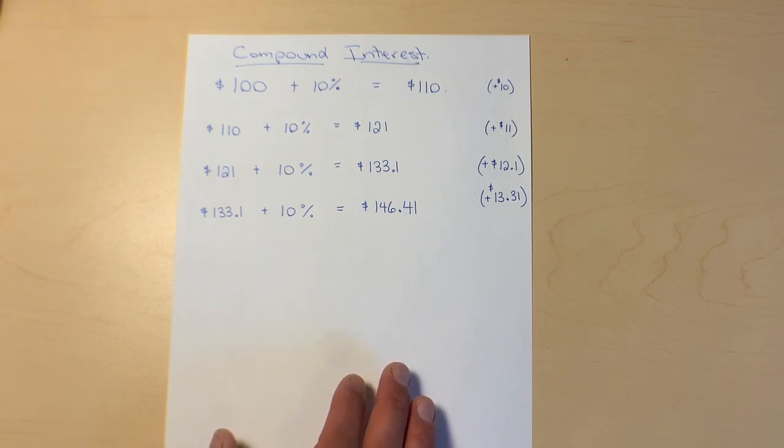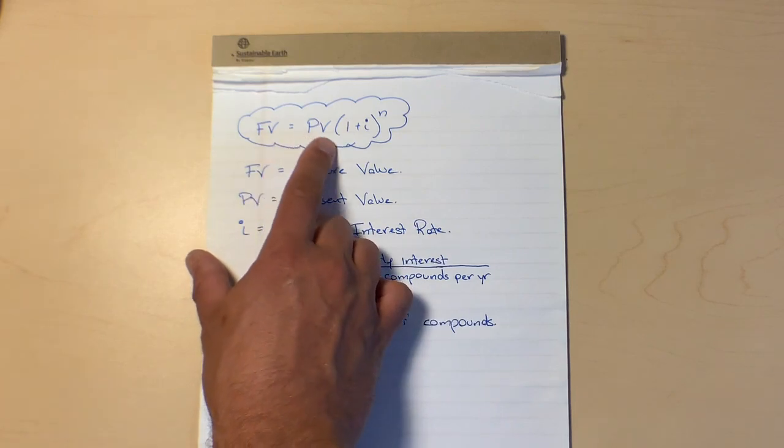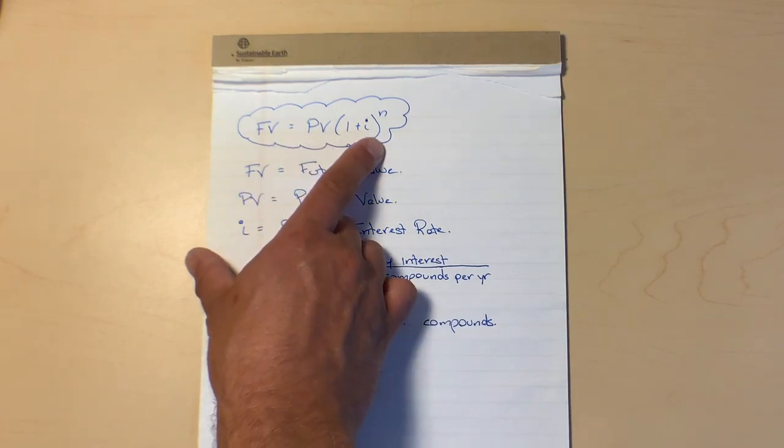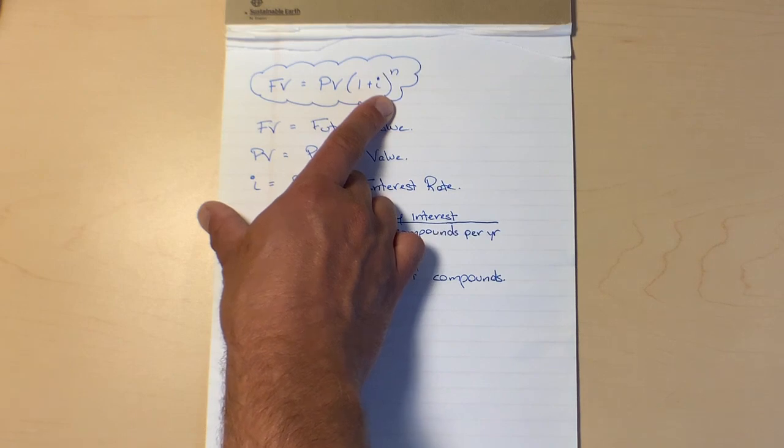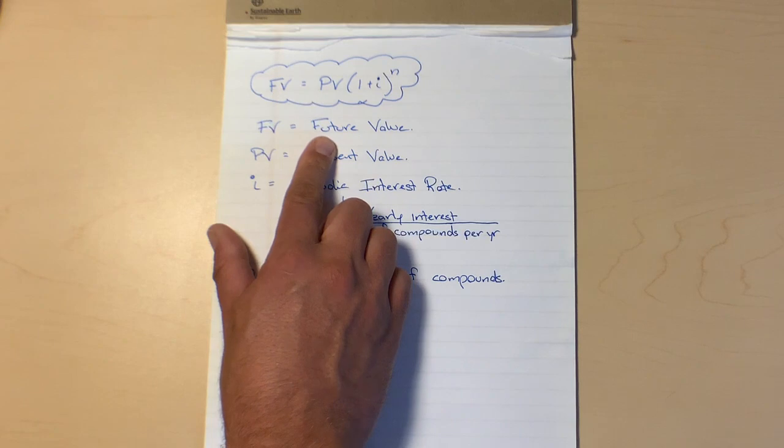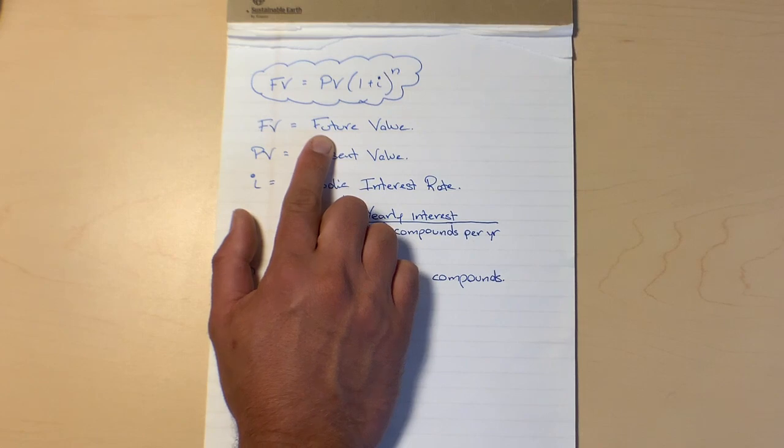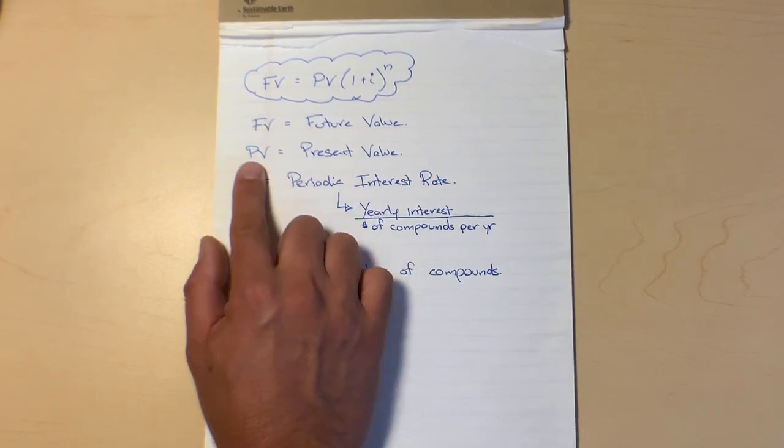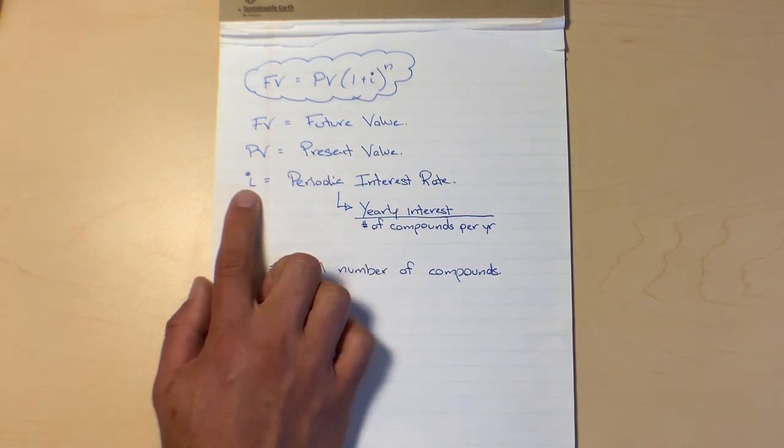Okay, so the formula for compound interest is a very simple formula but it kind of looks weird. It's this formula: FV = PV(1 + i)^n. So let's go through and pick apart what those things are. FV stands for our future value. So what is the value of our investment in the future. Could be tomorrow or it could be in 10, 20 years, who knows. Present value, PV, is the value right now.